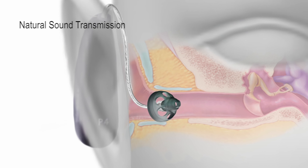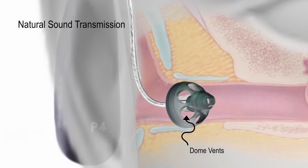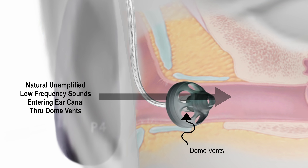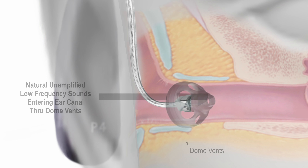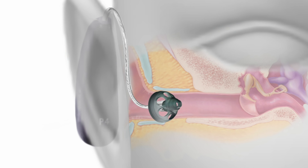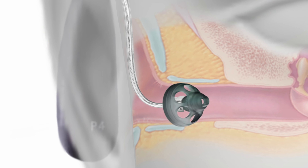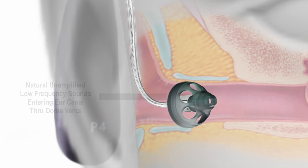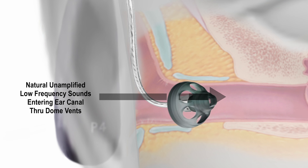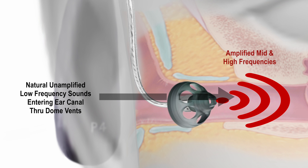The second factor that vent size impacts is how much natural sound can enter the ear canal. The larger the vent, the more natural sound can enter the ear canal. If you're like most people, you have good low frequency but bad high frequency hearing. In this situation, a large vent will not only prevent the occlusion effect, but also allows natural unamplified low frequency sounds to enter the ear canal and mix with the amplified high frequency sounds. Such blending of natural low frequency with amplified high frequency sounds results in the best possible outcome in achieving normal hearing that sounds natural.